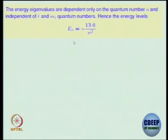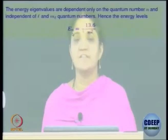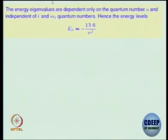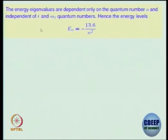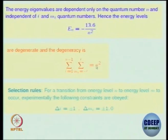The energy eigenvalues are independent of the azimuthal quantum number L and the magnetic quantum number M_L — just like Landau levels. This tells you the energy is degenerate, but not infinitely degenerate. Given an n, L can take values from 0 to n−1, and for every L, M_L is constrained to run from −L to +L. These constraints come from the differential equations. The degeneracy for every principal quantum number is n² without spin, or 2n² if you include the spin quantum number.